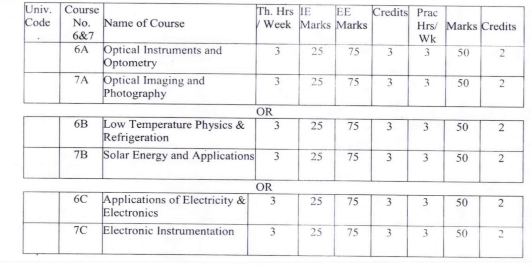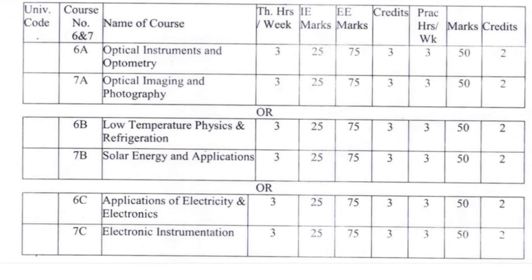Section C paper 6C is titled 'Applications of Electricity and Electronics' and paper 7C is 'Electronic Instrumentation'. As usual, 75 marks for the external exam and 25 marks for the internal exam.